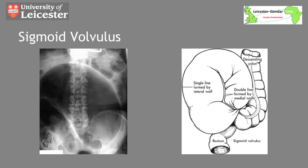Sigmoid volvulus tends to occur in the elderly population and results from a twist in the sigmoid colon. As a result you can see an inverted U-shape appearance, which is known as the coffee bean sign, with the apex pointing towards the right upper quadrant. Clinically the abdomen will be massively distended and as a consequence you often get a poor quality film in which you do not see the coffee bean sign so clearly. Treatment is passing a flatus tube per rectum beyond the twist point to decompress the bowel above and thus allowing the twist to untwist.